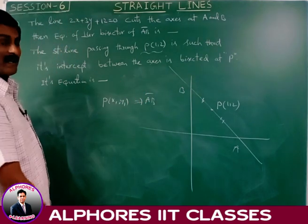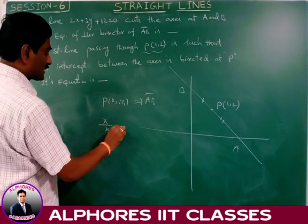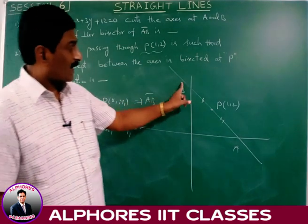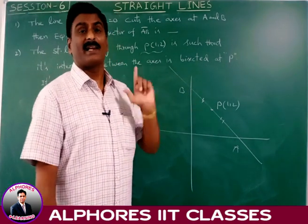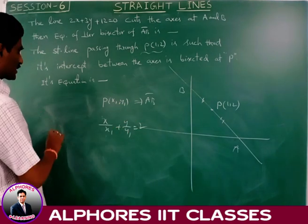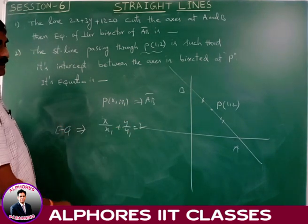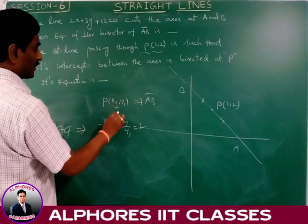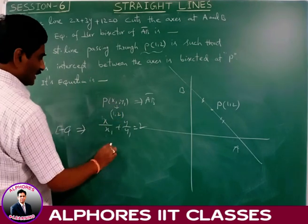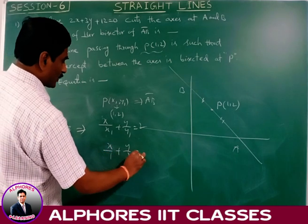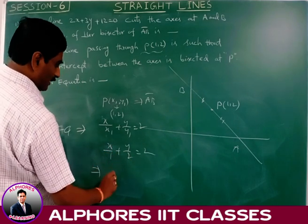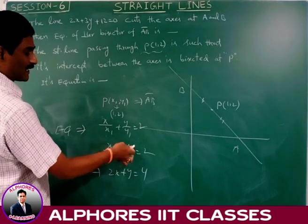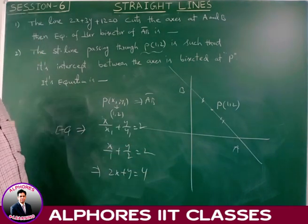Using the direct formula: if P(x1, y1) is the midpoint of the intercept AB, the equation of the line is x/x1 plus y/y1 equals 2. Here x1 equals 1 and y1 equals 2. So x/1 plus y/2 equals 2. After taking LCM and cross multiplication, 2x plus y equals 4. This is the required equation of the line.